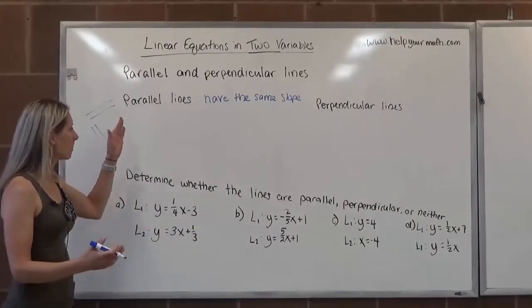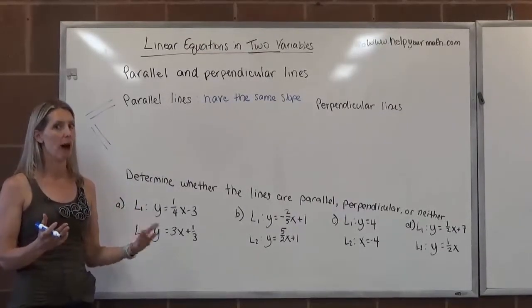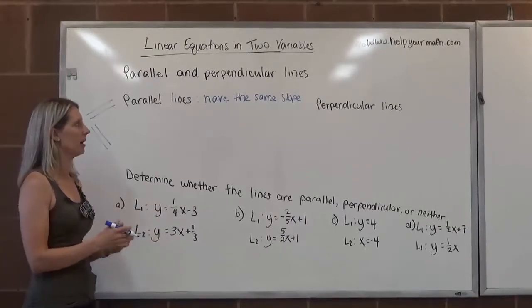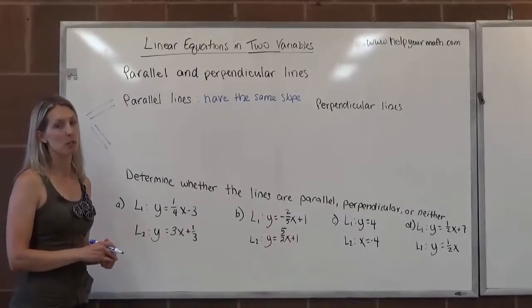So when we think of parallel lines, we think of lines that have the same slope, but it's also important to note that they also must have different y-intercepts. So if it's given in slope-intercept form, we want to keep that in mind. So parallel lines have the same slope.